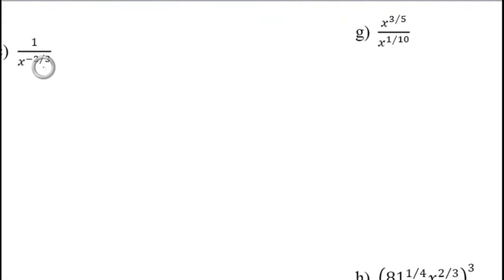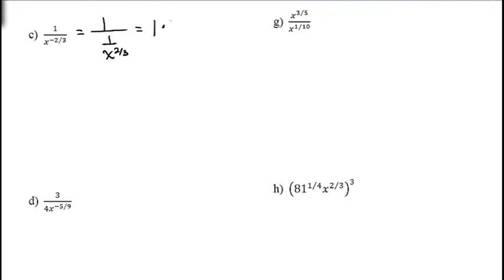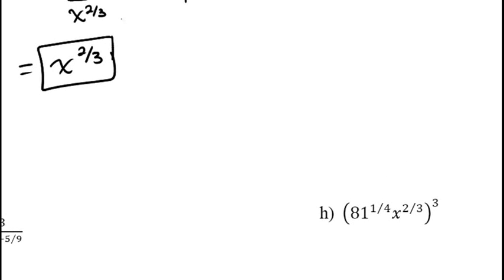For 1 over x to the negative 2/3: this is 1 divided by (1 over x to the positive 2/3). Dividing by a fraction means multiplying by its reciprocal, so this equals x to the 2/3. Essentially, moving a variable with a negative exponent from the denominator to the numerator changes the sign of the exponent — so x to the negative 2/3 in the denominator becomes x to the positive 2/3 in the numerator.